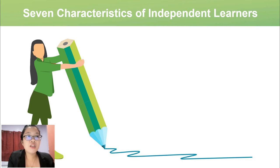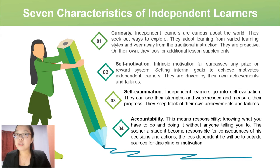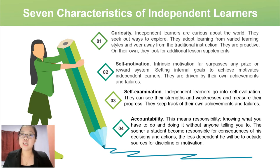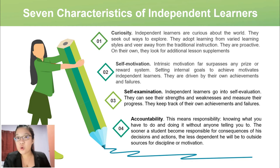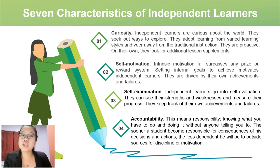We have here the seven characteristics of an independent learner. Not all students are naturally independent learners — some become so based on life circumstances and learning style. The first characteristic is curiosity: an independent learner is curious about the world, seeks out ways to explore, adopts varied learning styles, veers away from traditional instruction, and proactively looks for additional lesson supplements.